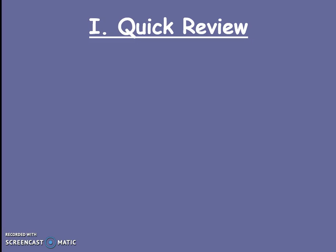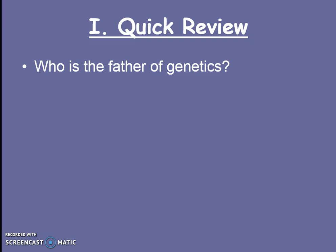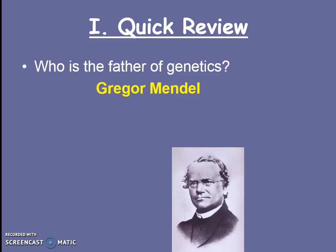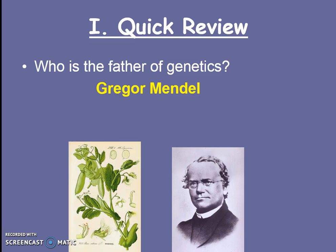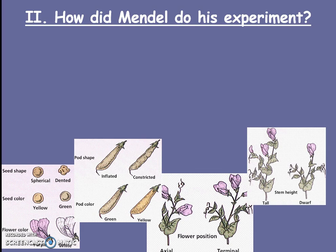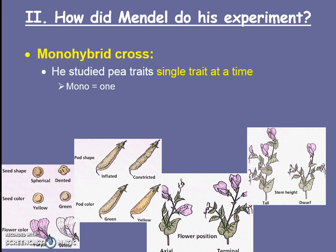Before we get too far, let's quickly review — who was the father of genetics? Gregor Mendel. He's a monk who was obsessed with pea plants. Mendel did his experiments as a monk in a monastery and he would look at many different traits, but he only looked at one single trait at a time, which is why we call it a monohybrid cross, because the prefix mono means one.